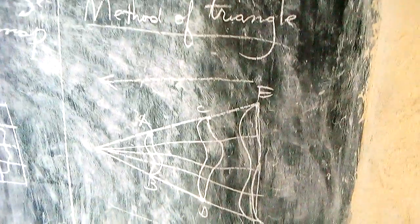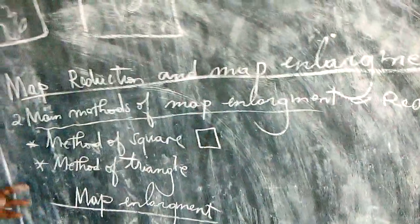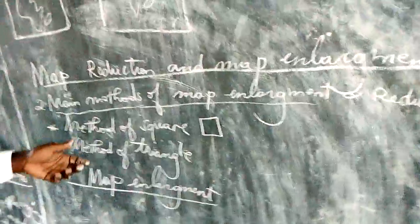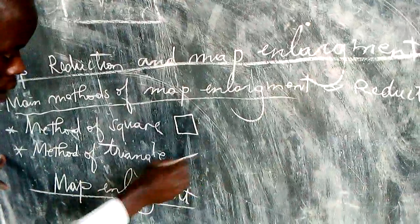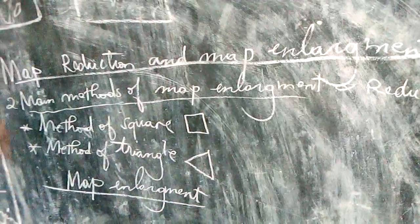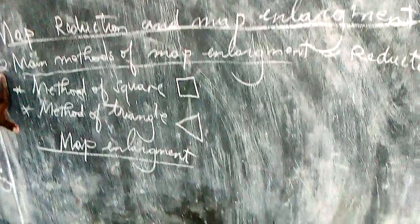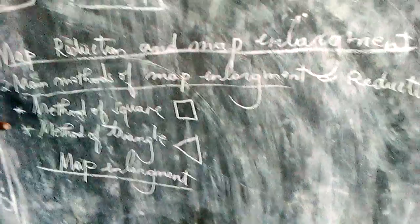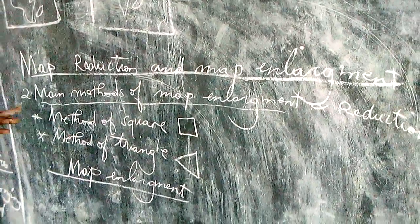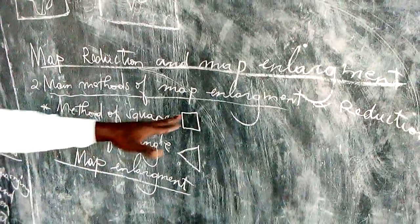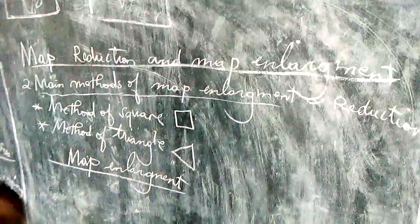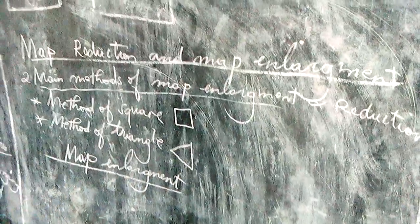I think the two methods of increasing or decreasing the size of a map are very easy to understand. As we have said, we have two methods: the method of squares and the method of triangles. The two methods are very important because they help us to reduce or increase the size of a map. Thank you very much for watching this video. Don't forget to subscribe and give a comment so that we can keep on improving our teaching and learning practice. Have a nice time.